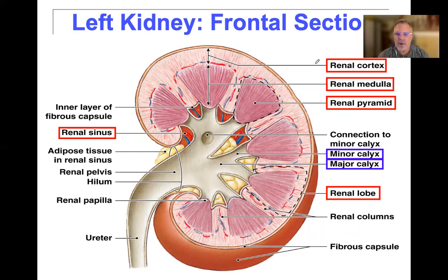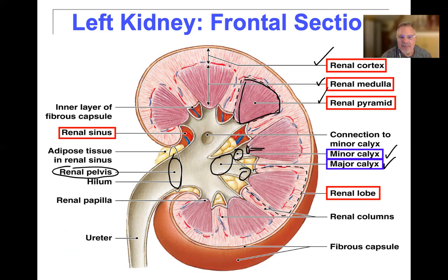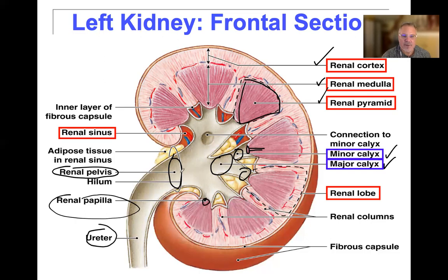To review: the outer part is the renal cortex, the inner part is the medulla, and that full triangular section is the renal pyramid. At the apex of the renal pyramid is where the papillary duct is — the collecting duct of the nephron leads right into that. The filtrate dumps into the minor calyx, the minor calyces dump into the major calyx, and then into the renal pelvis. Another name for the papillary duct is the renal papilla — both are interchangeable terms — which leads into the ureter after the renal pelvis.